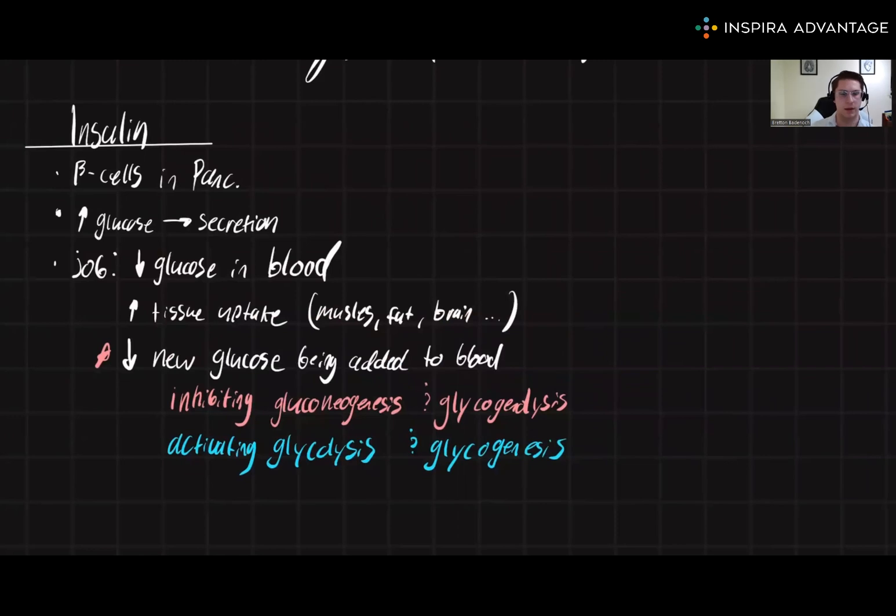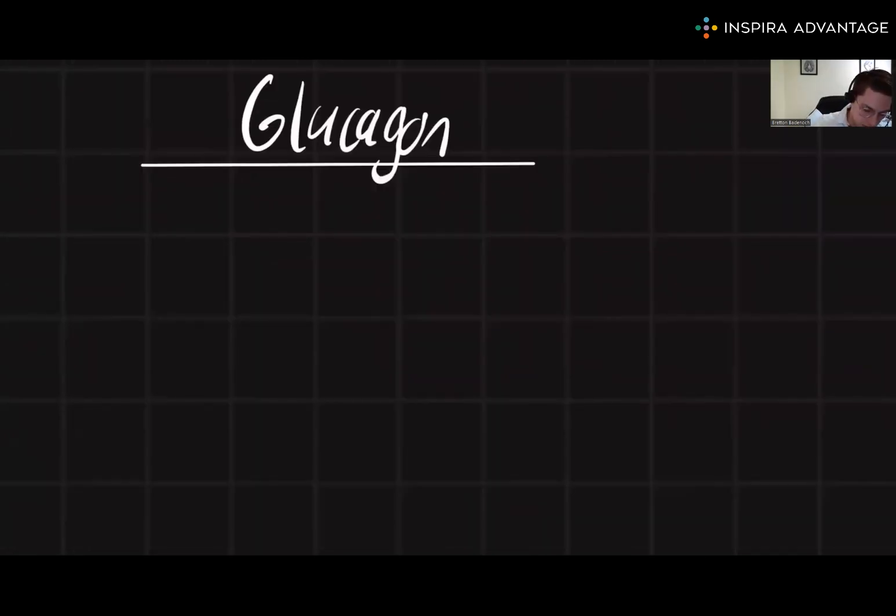Now, let's take a look at glucagon. Glucagon is secreted from alpha cells in the pancreas in response to low glucose in the blood. This is the opposite from when insulin is secreted. The way I remember what glucagon does is it sounds like glucose is gone—gluca-gone. Glucose is gone from the bloodstream.